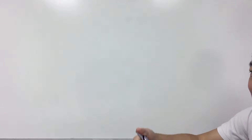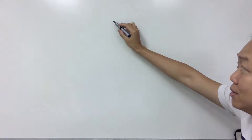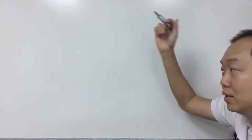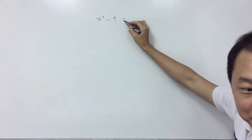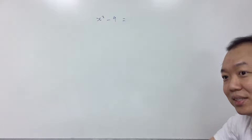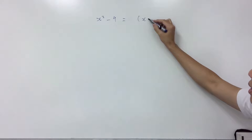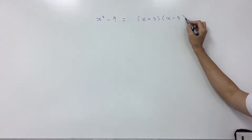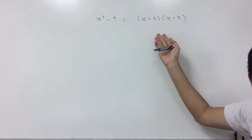Now how about rule number three? We know the forward method, now I have to do the reverse. What do I mean by the reverse? So for example, I have X squared minus nine. What is X squared minus nine? Reverse it. X minus three times... X plus three, X minus three. Okay. So forward and backward — this is rule number three.